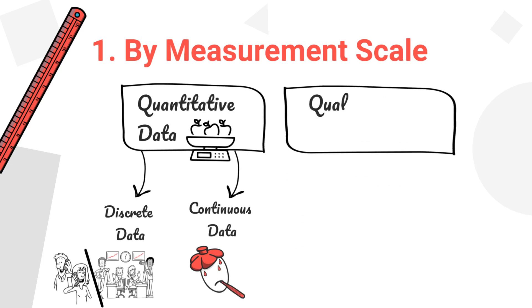Qualitative data describes qualities or characteristics and isn't numerical. It focuses on understanding the what and why, rather than just the how much. It can be classified as nominal data.